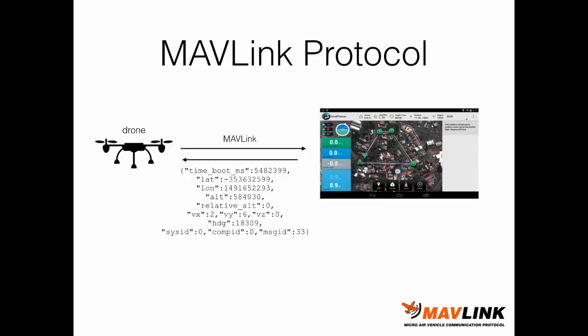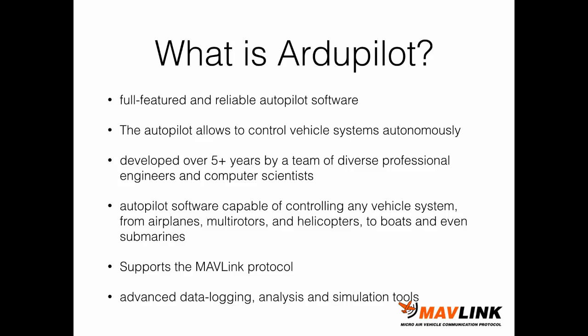A set of messages are exchanged continuously between the ground station and the drone in order to monitor and control the state of the unmanned vehicle. The MAVLink protocol is typically implemented inside autopilots, which govern the control and motion of the drone. The most common autopilot for drones and unmanned vehicles is ArduPilot. ArduPilot is a full-featured and reliable autopilot software that allows autonomous control of the vehicle system. It has been developed over five years by a team of diverse professional engineers and computer scientists. It supports advanced data logging, analysis and simulation tools for analyzing the behavior of the unmanned vehicle after completing a mission.